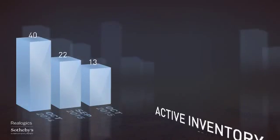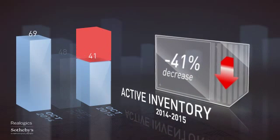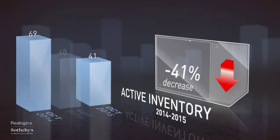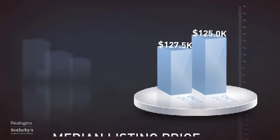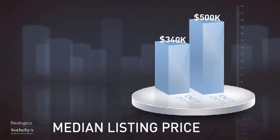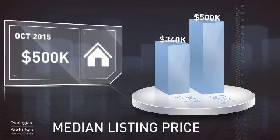The number of active listings was down 41% from one year earlier and down 15% from the previous month. As you can see, the median listing price for the month was just under $500,000.